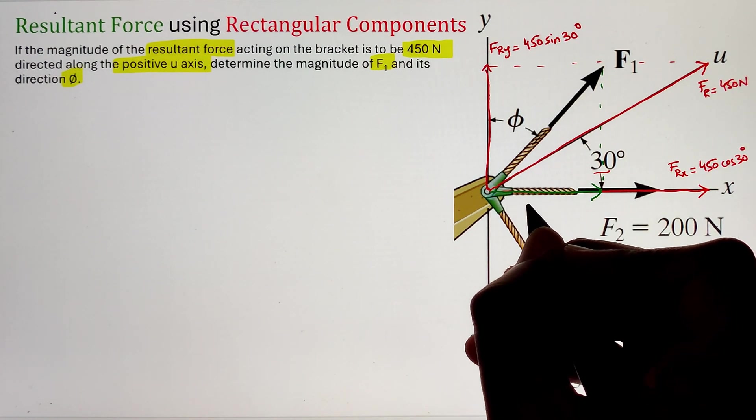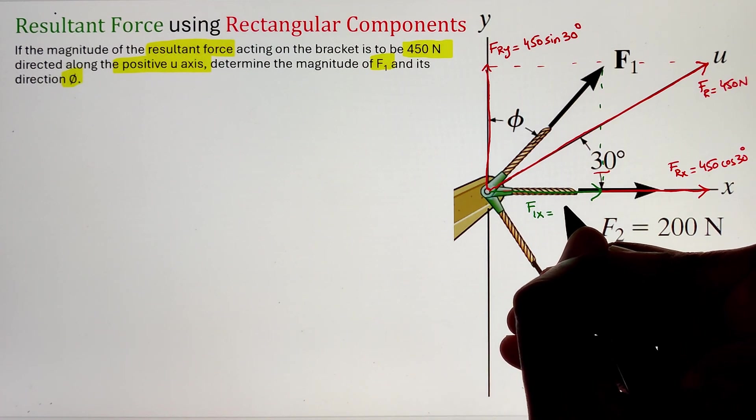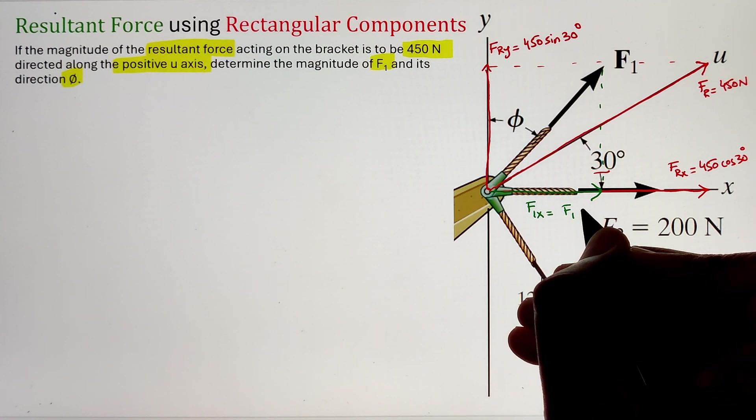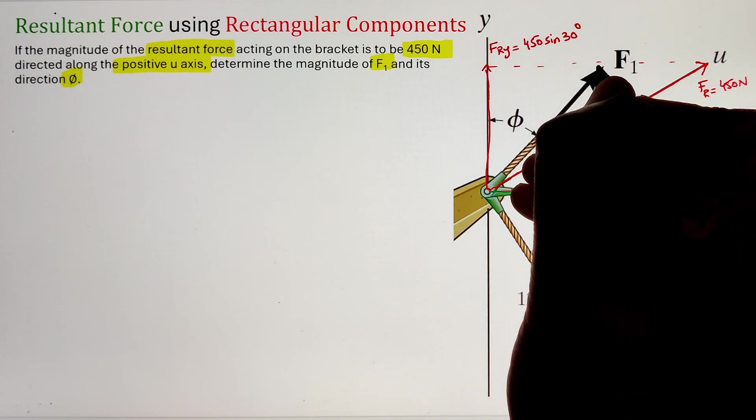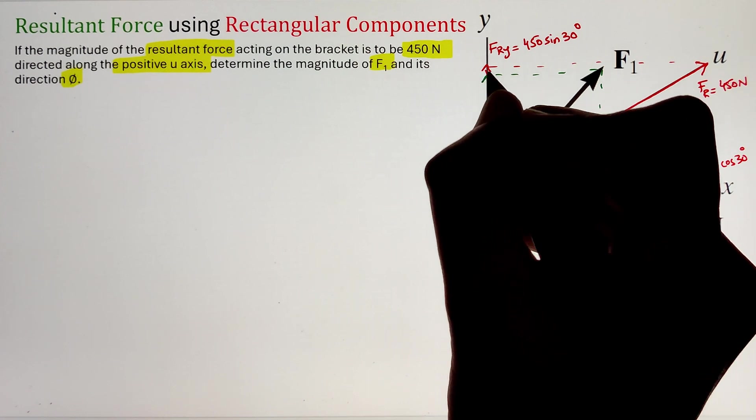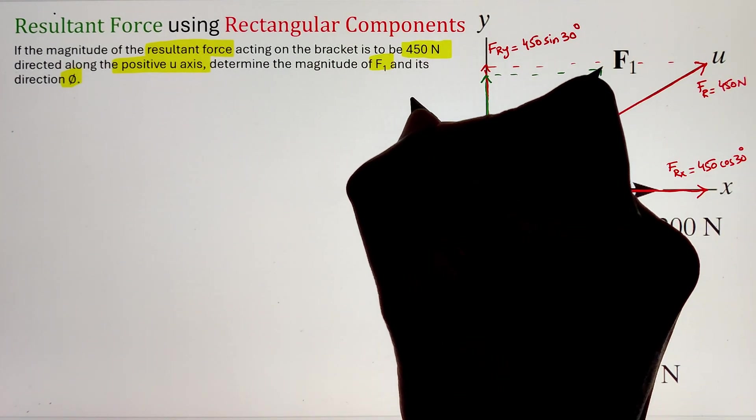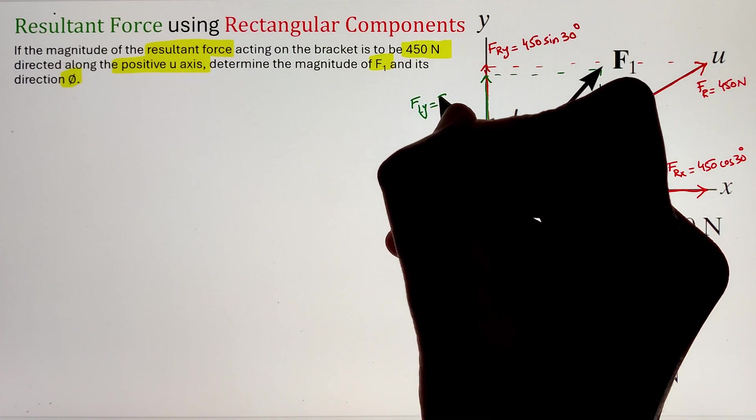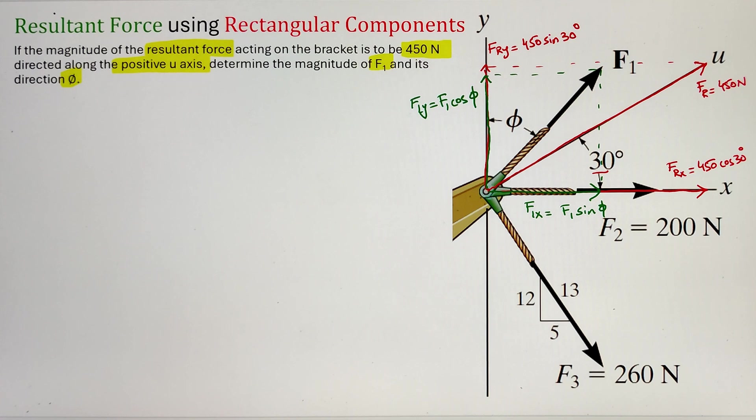If I take the cosine function of the angle phi, it will project the force along the y-axis. One thing to keep in mind is that the cosine function always projects the force vector along the axis from where the angle is being measured. So in this case, since angle phi is measured from the y-axis, our cosine function will project the force F1 along the y-axis.